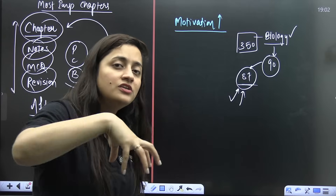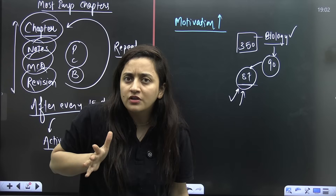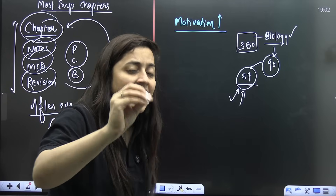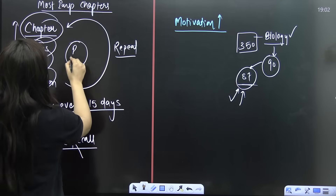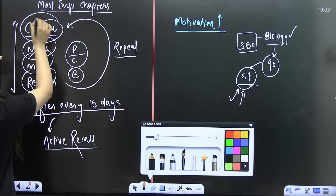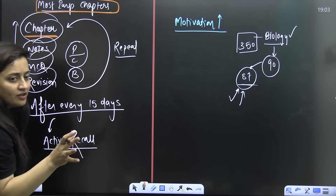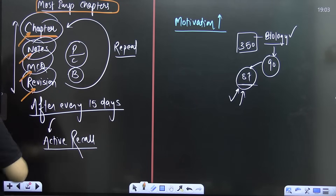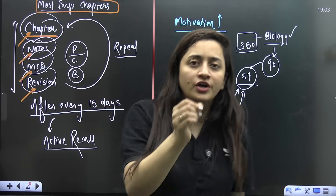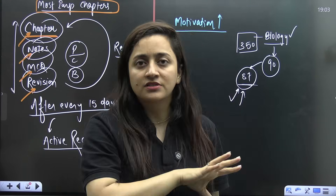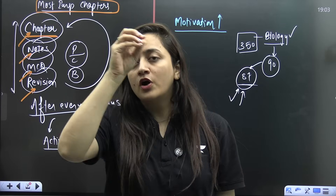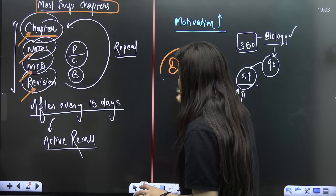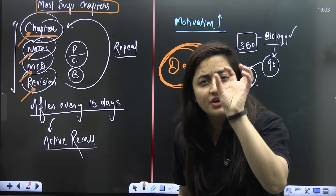Study biology every day and revise it every day. You can have different approaches — directly go for PYQs, revise your notes — as per the strength of your chapter. For physics and chemistry, if any chapter is very important and still pending, don't go for a two- or three-hour one-shot; go for a detailed one-shot. Make notes, practice MCQs, and revise. It's good to devote time to such important chapters. Till this summer, complete your most important chapters in physics and chemistry.